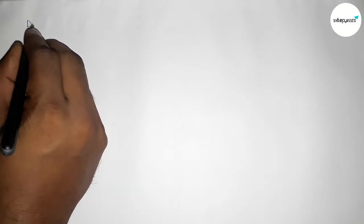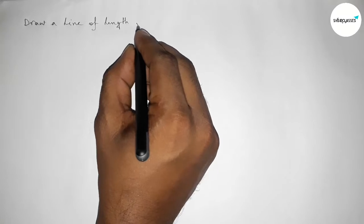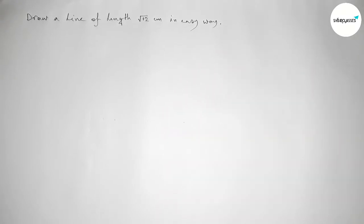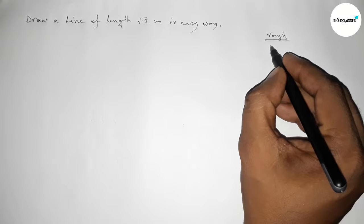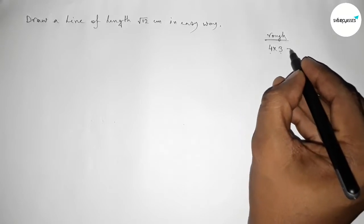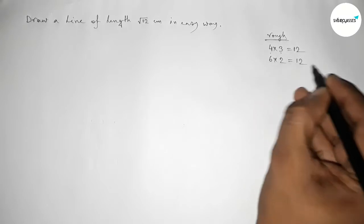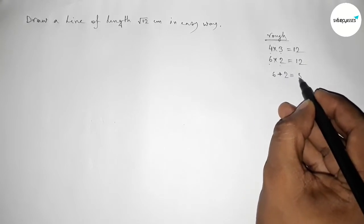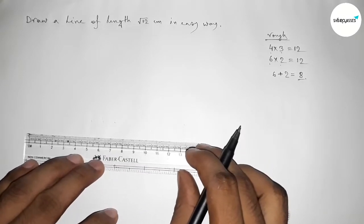Welcome to SI Share Classes. Today we have to draw a line of length root 12 centimeter in an easy way. First, let's discuss some important calculations. We can write 12 as 4 into 3, or also as 6 into 2. If we add 6 plus 2 we get 8, so first we have to draw a line of length 8 centimeter.